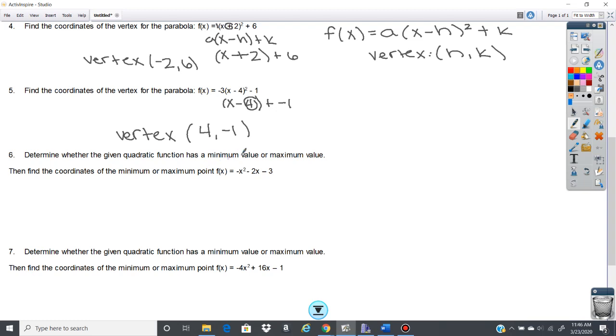Now this next one is in this form: ax² + bx + c. So in this one, to find the x value of the vertex, you're going to go negative b over 2a.